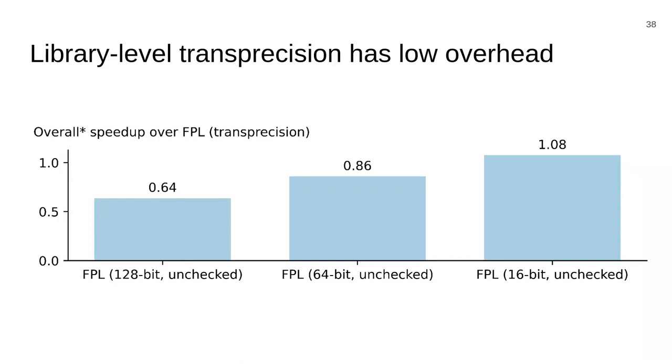We also tried running a version of FPL that uses fixed-precision 16-bit integer arithmetic and no overflow checks. This version of FPL is only correct on the subset of test cases that can be run using 16-bit integer arithmetic. And yet, on this subset of test cases, it still only has a speedup of 1.08x over FPL with full transprecision which supports all test cases. This indicates that the overhead of our transprecision design is quite low.